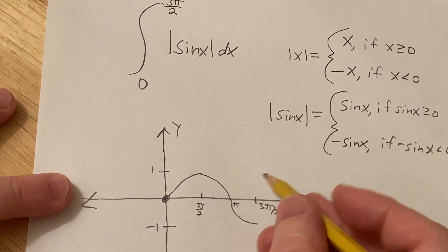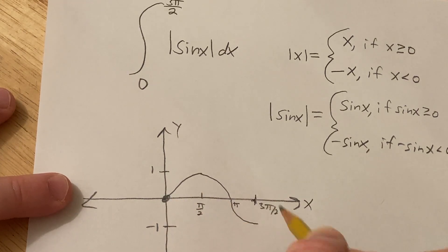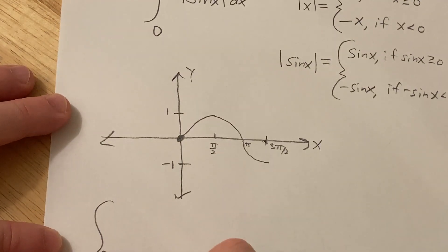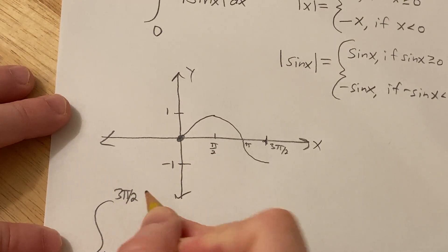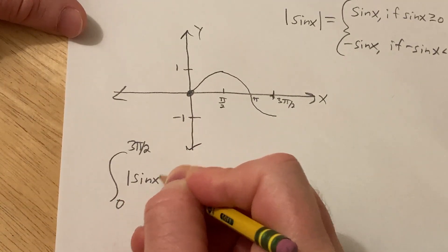So we're basically looking to integrate from here to here. Okay, so now we can break up the integral using this picture. So we have 0 to 3 pi over 2, and we have the absolute value of sine x dx.